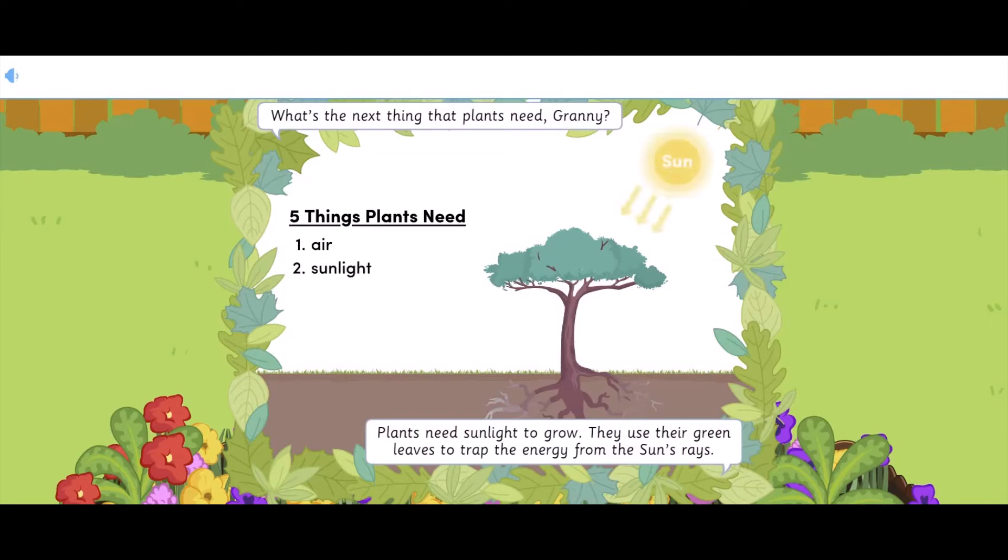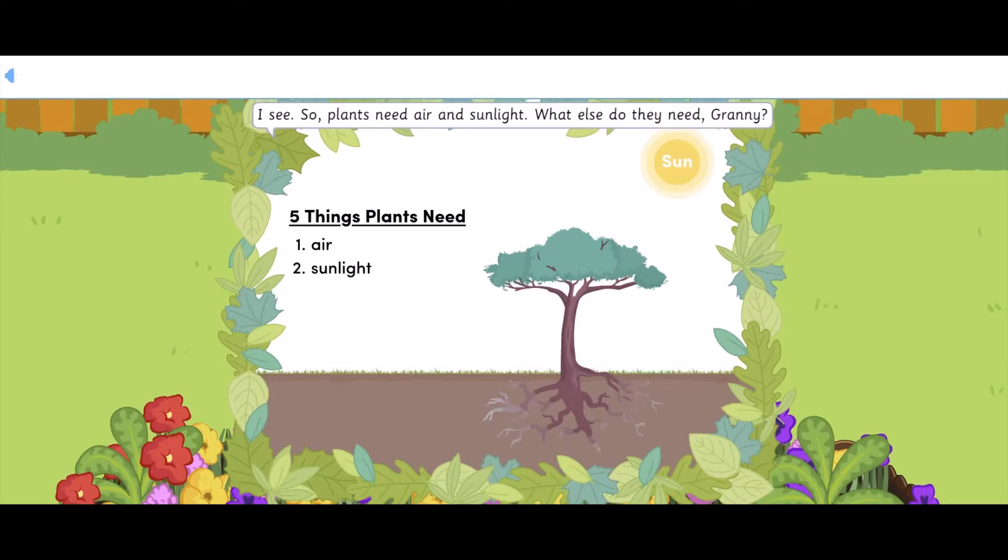Plants need sunlight to grow. They use their green leaves to trap the energy from the sun's rays. I see. So, plants need air and sunlight. What else do they need, Granny?